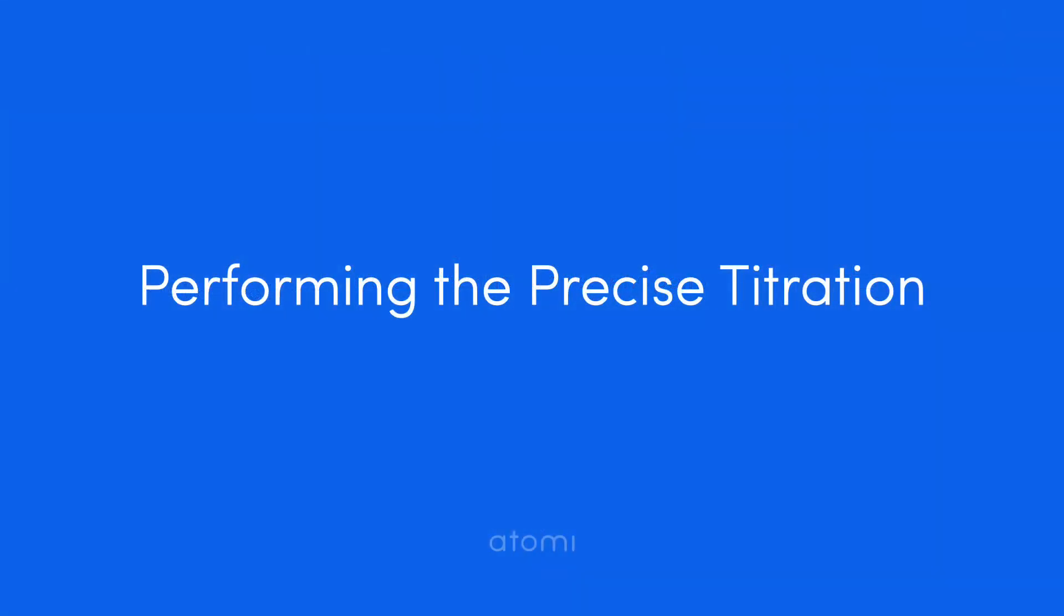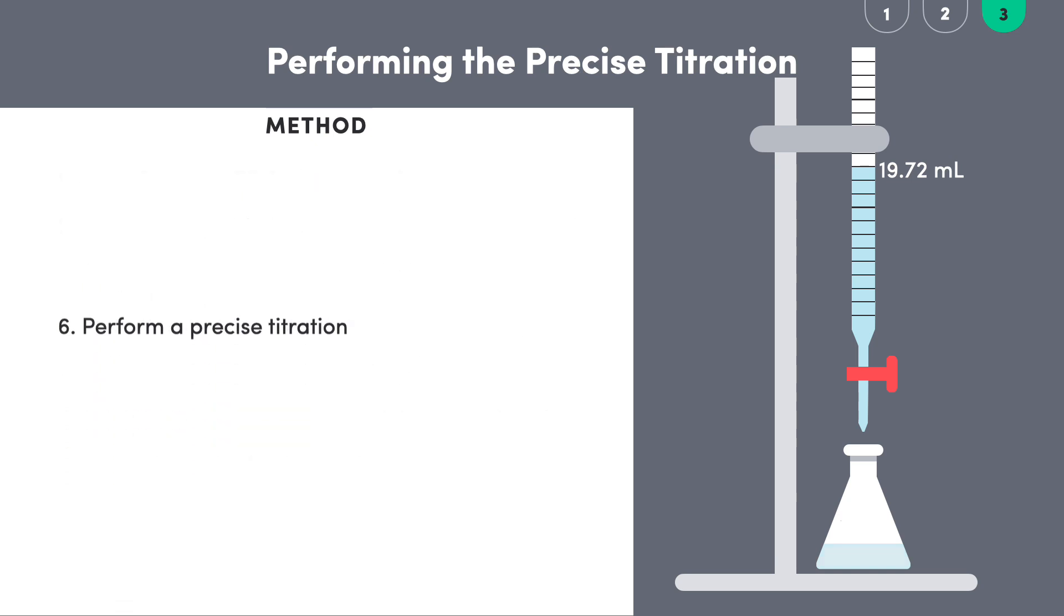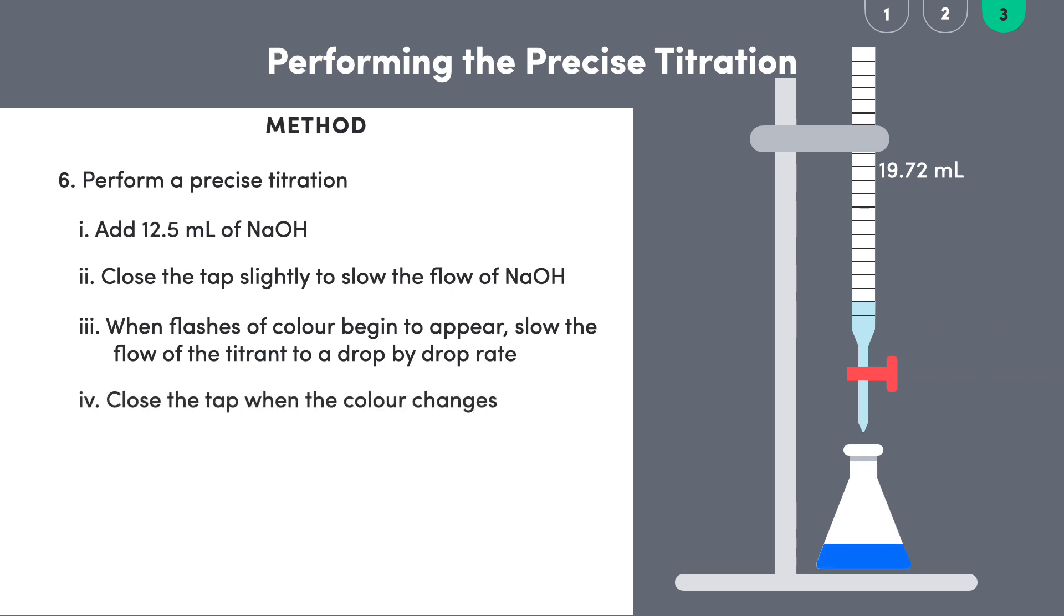Before the next run of the titration, we rinse the conical flask using deionized water and add another 10.00 milliliters of analyte along with indicator into the conical flask. We freely add 12.5 milliliters of titrant, then we close the tap slightly to slow things down. When flashes of color begin to appear in the analyte, we slow the flow of the titrant so it's being added just drop by drop. This is the part of the titration that requires a fair bit of patience and care, as it may take only one extra drop for the indicator to reach the endpoint, at which point you've got to stop the dripping straight away.